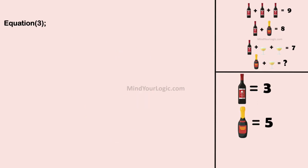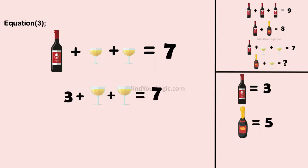Similarly, solving equation 3: Wine plus glass plus glass equals 7. Substituting the value of wine and simplifying, we get glass equals 2.